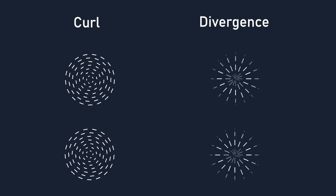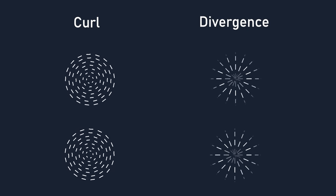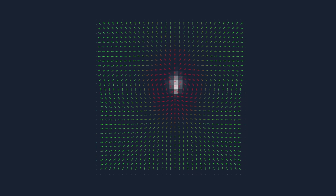Given any vector field, we can measure and find out how much curl it has and how much divergence it has.